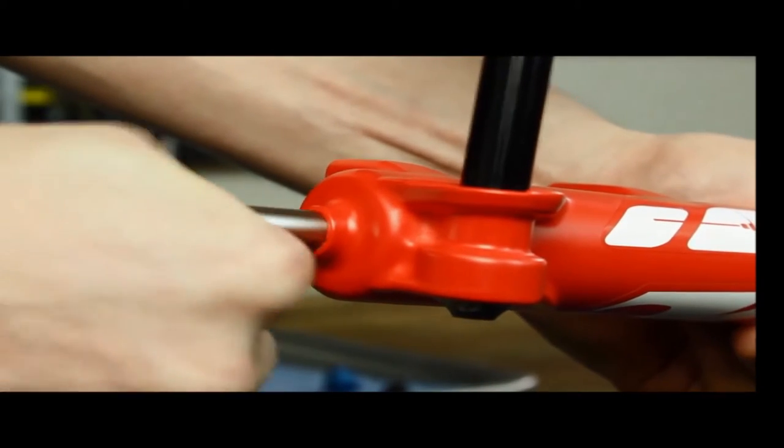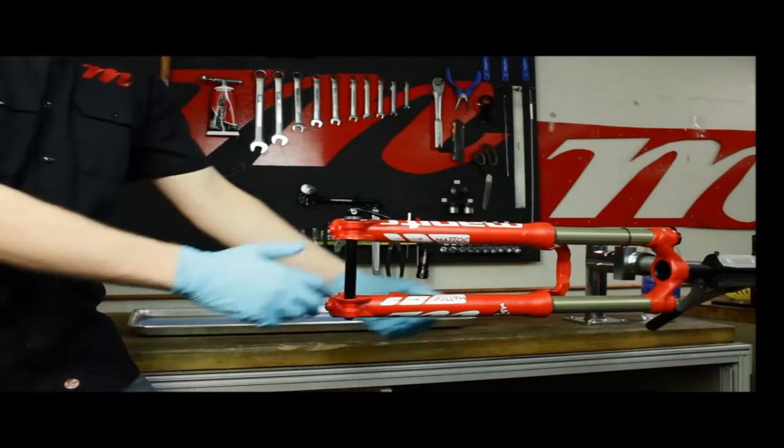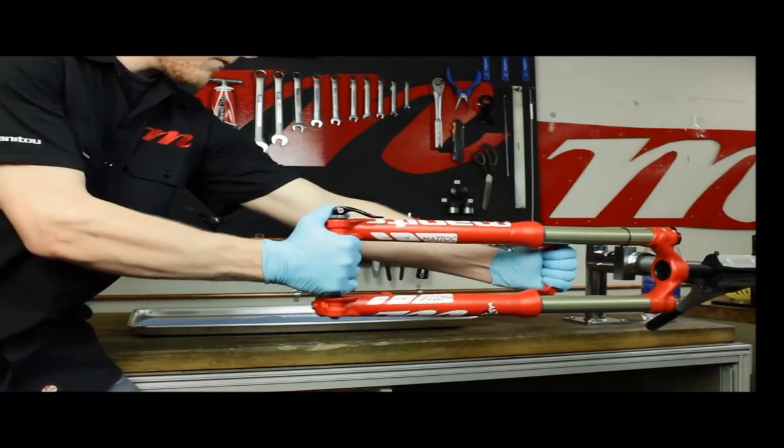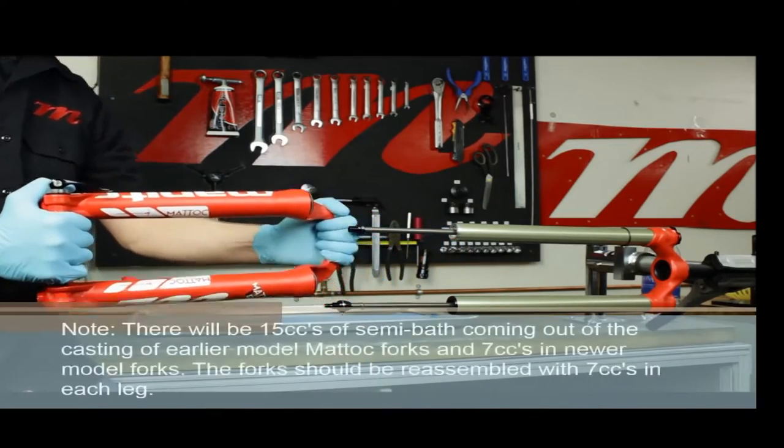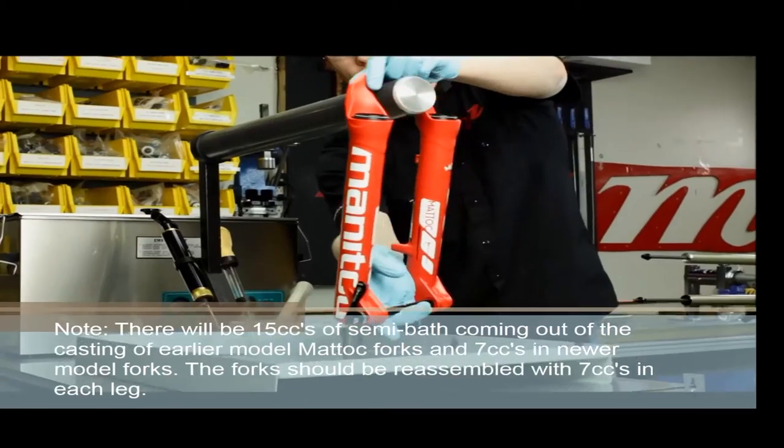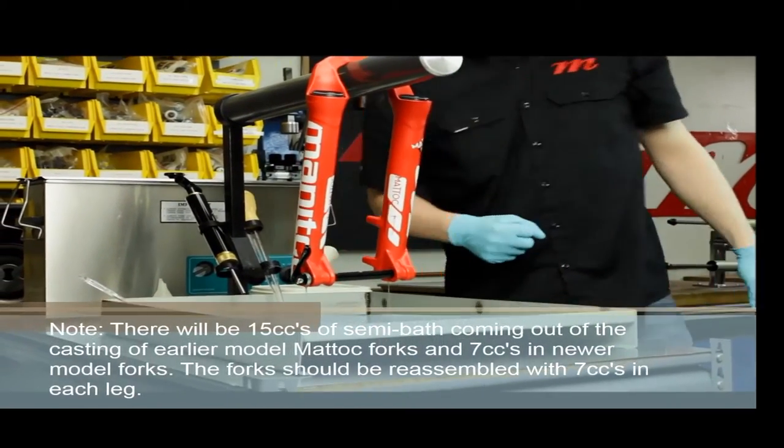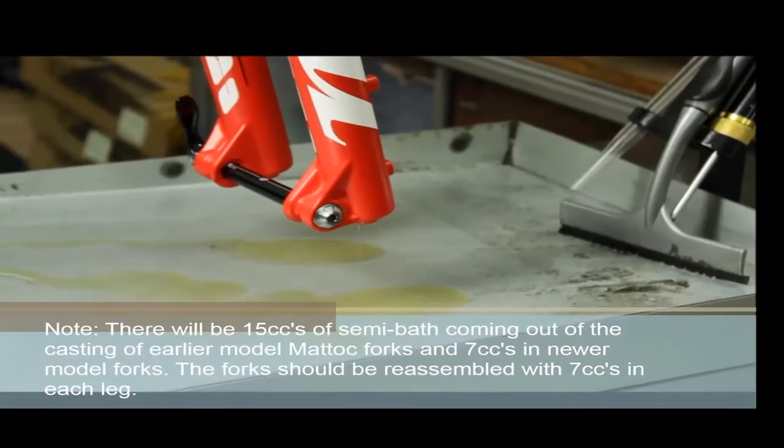With this indication, you're now ready to pull the outer casting from the inner legs. Remove the outer casting and place over a tray or bucket. There will be about 15 cc or 15 milliliters of semi-bath fluid in each outer leg. You'll want to let this drain out before reinstalling the legs.